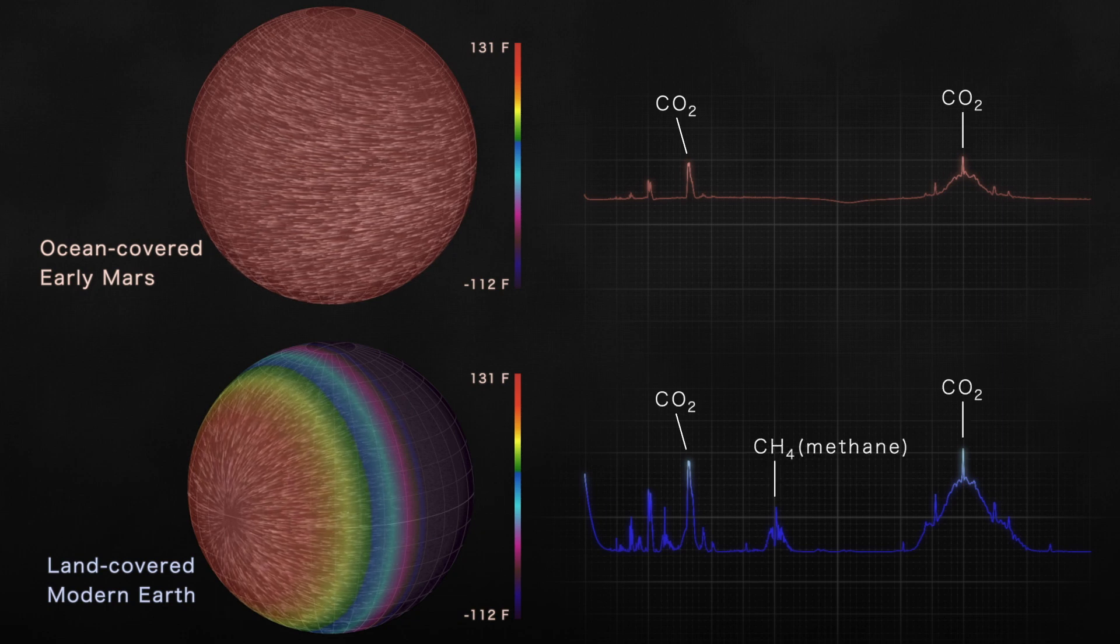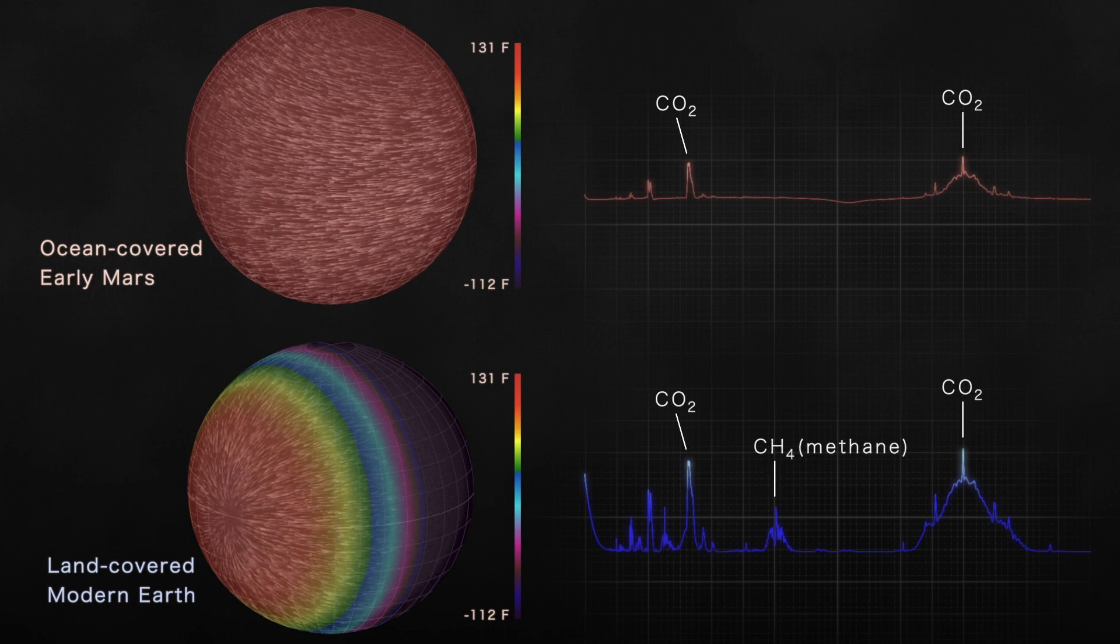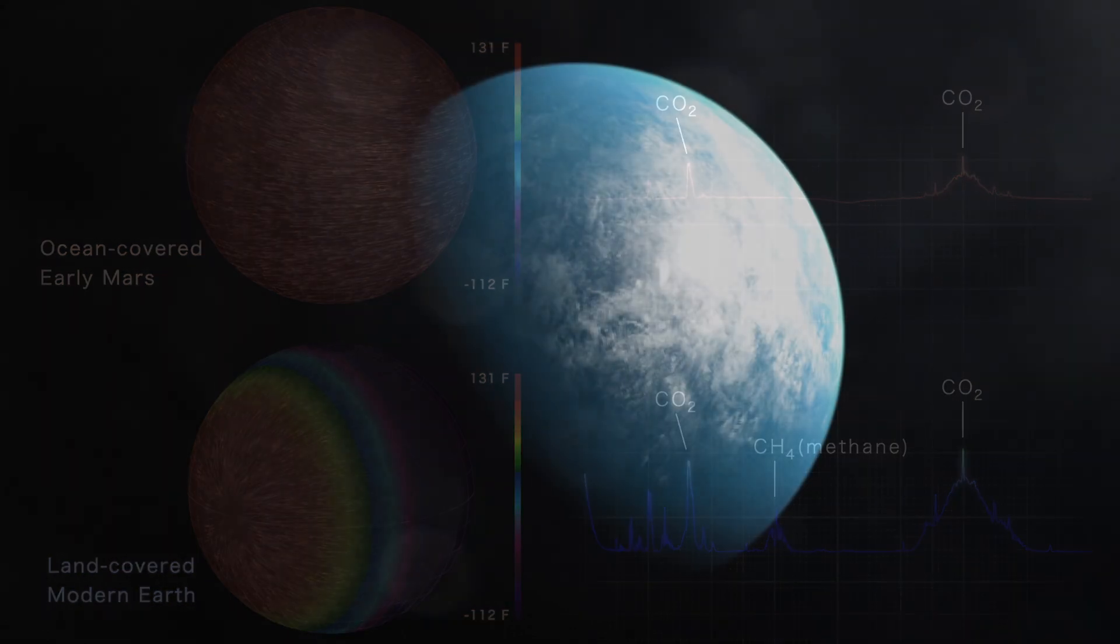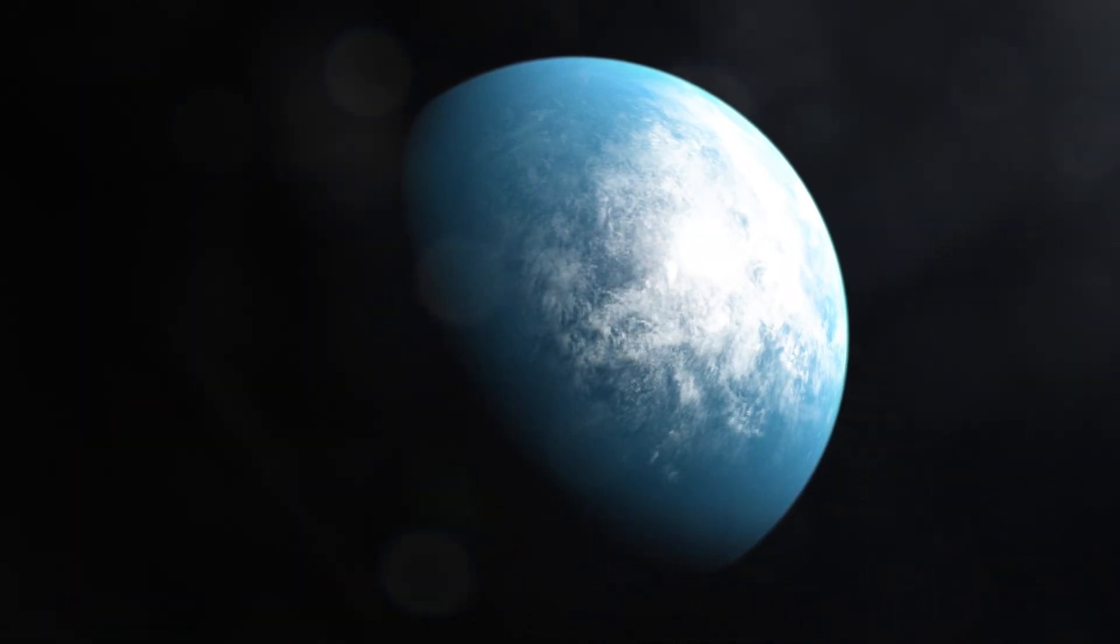By simulating these data now, scientists can make predictions for real future observations and narrow the range of TOI-700d's possible conditions.